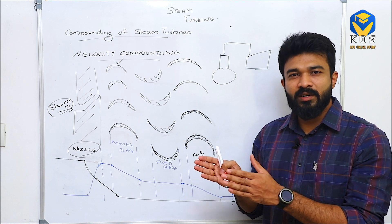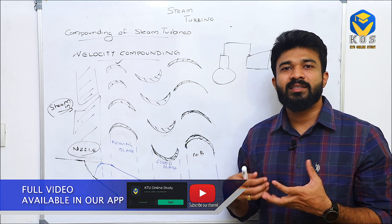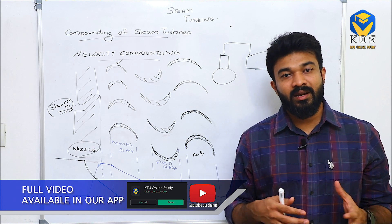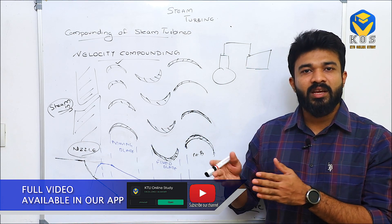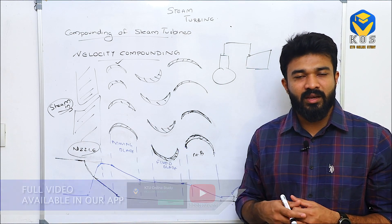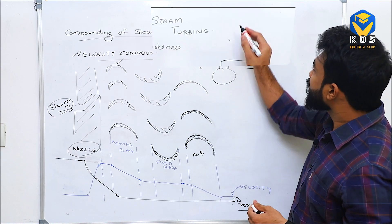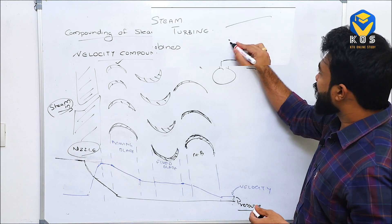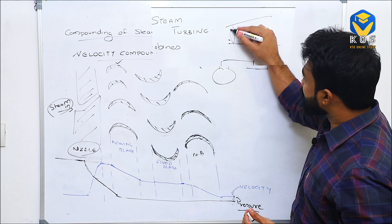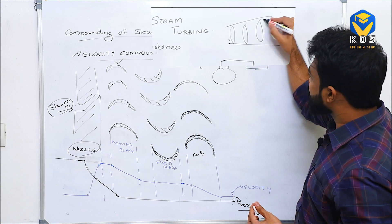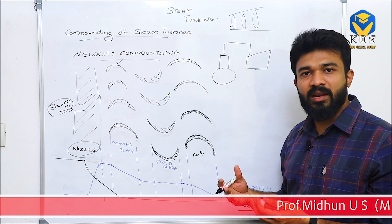If we try to extract complete energy with one set of moving blades, we have practical difficulties. So we use stage-by-stage absorption of this velocity, with many stages — first-stage turbine, second-stage, third-stage.